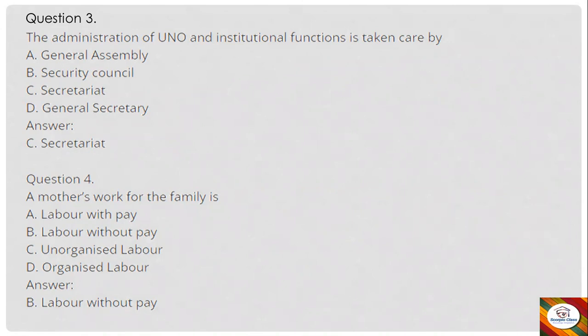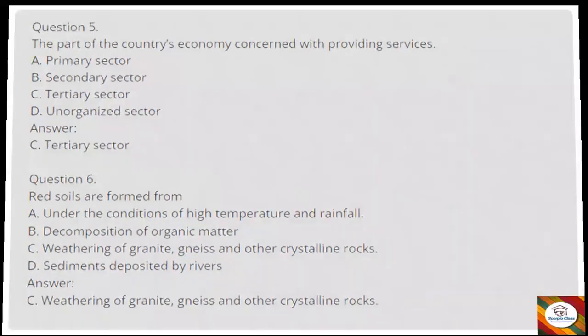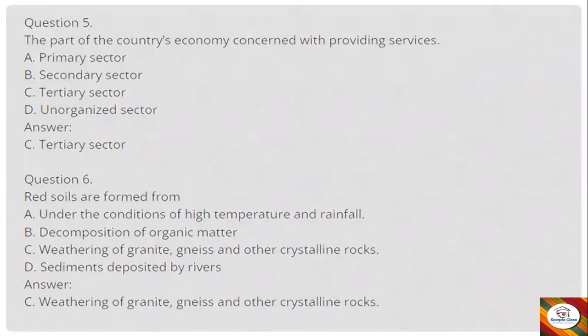Question 3: The administration and institutional functions of the UNO is taken care of by — A) General Assembly, B) Security Council, C) Secretariat, D) General Secretary. Answer: C, Secretariat. Question 4: A mother's work for the family is — A) labor with pay, B) labor without pay, C) unorganized labor, or D) organized labor. Answer: B, labor without pay.